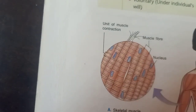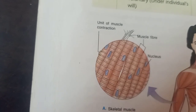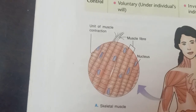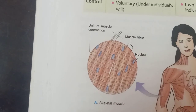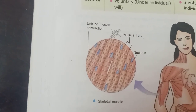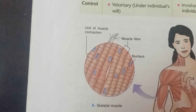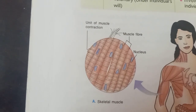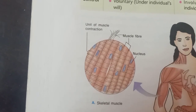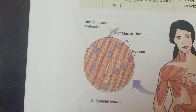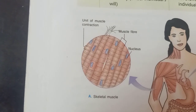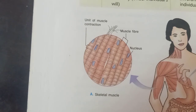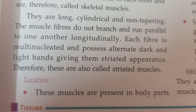Here is the diagram of striated muscles, also called skeletal muscles. You can easily see the muscle fibers and the many nuclei — that is why it is multi-nucleated. They are present in longitudinal form. The fibrous bands are straight, which is why they are known as striated muscles.